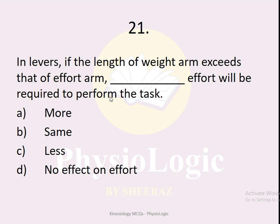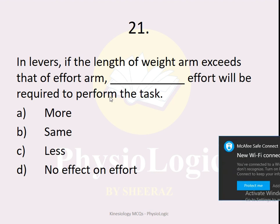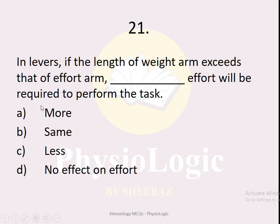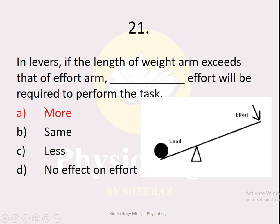MCQ number twenty-one: in levers, if the length of the weight arm exceeds that of the effort arm, how much effort will be required — more, the same, less, or no effect? The answer is more effort. When the weight arm exceeds the effort arm, there is mechanical disadvantage, meaning more effort is required to perform the task.